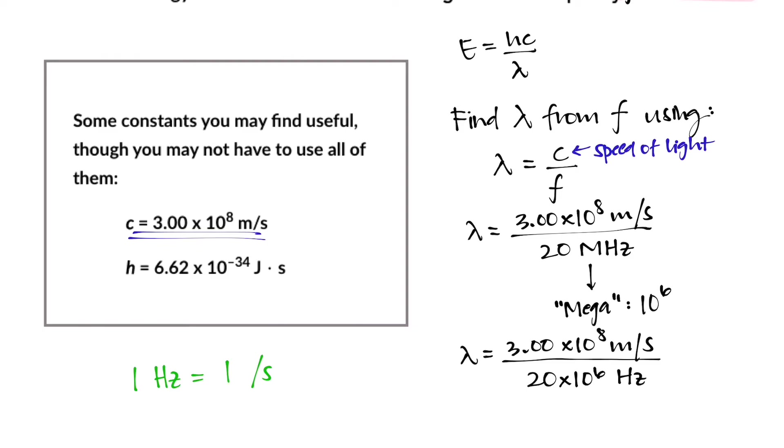So we end up replacing hertz down in the denominator with that unit of per seconds. Now notice that we have per seconds in the numerator, per seconds in the denominator. So those two things will cancel each other out, leaving behind only the units of meters, which are perfect because wavelength should generally have units of distance, since it is the distance between the two crests of a wave.